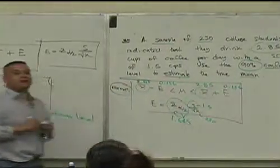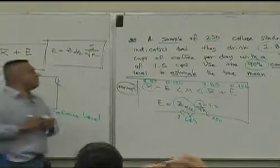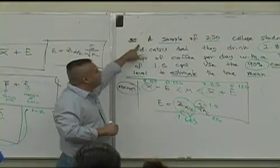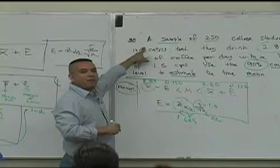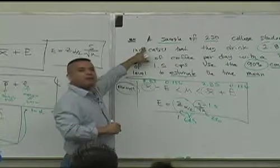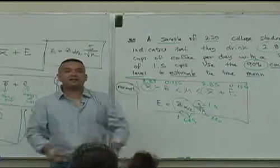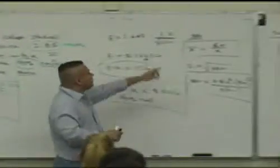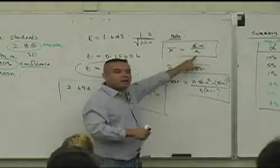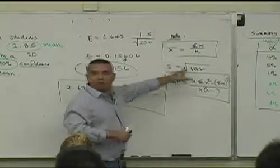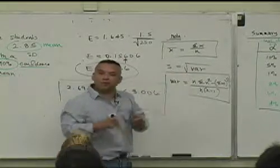They just didn't fall out of the sky. When you take a sample of data, you're asking college students how much cups of coffee to drink per day and they're giving you numbers. With that list of numbers, you're computing what? The mean and the sample standard deviation. You're computing that.